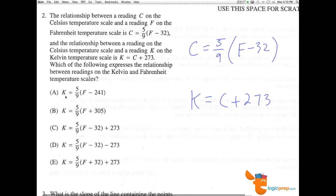Well, if you look carefully here, K equals C plus 273, we know that C is five-ninths times F minus 32. So we can say that